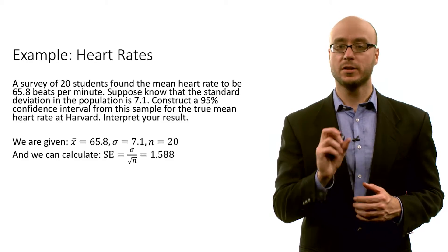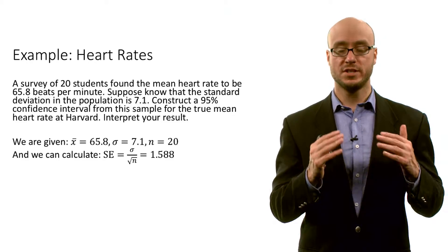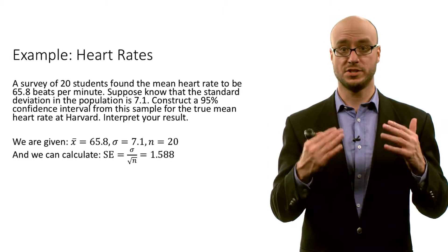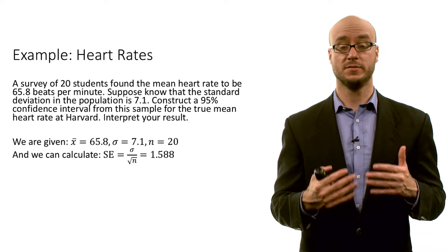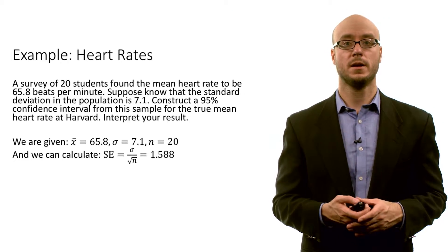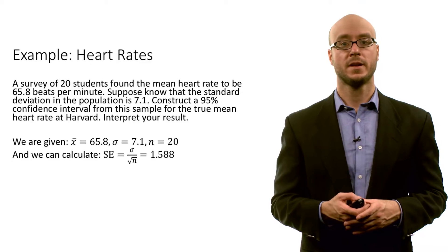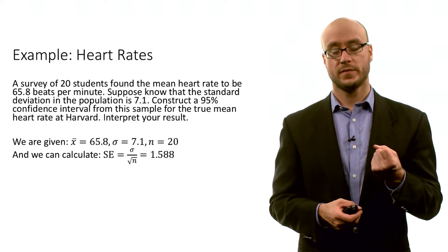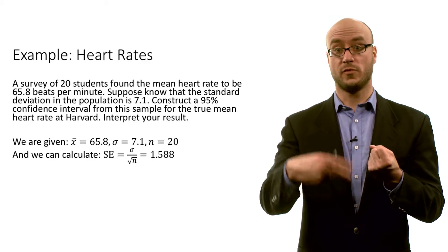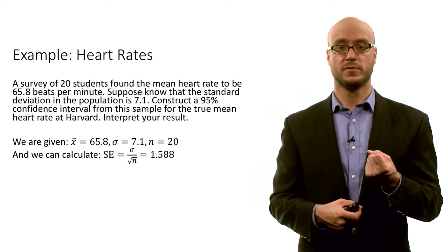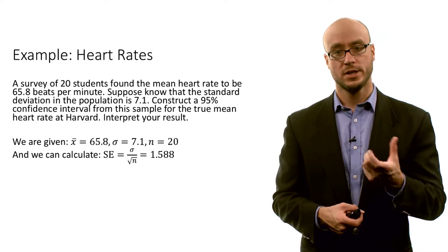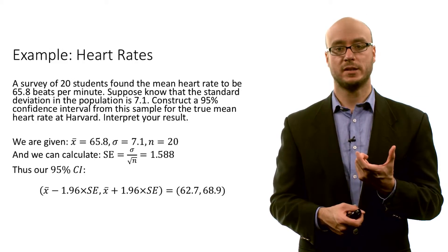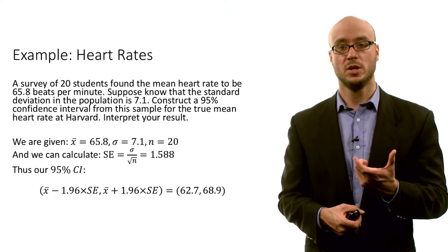That standard error is the standard deviation of the sampling distribution for the sample mean — in which the sample mean is in fact the heart rate for students — for a random sample from the population of all Harvard students. So then we can calculate a 95 percent confidence interval.